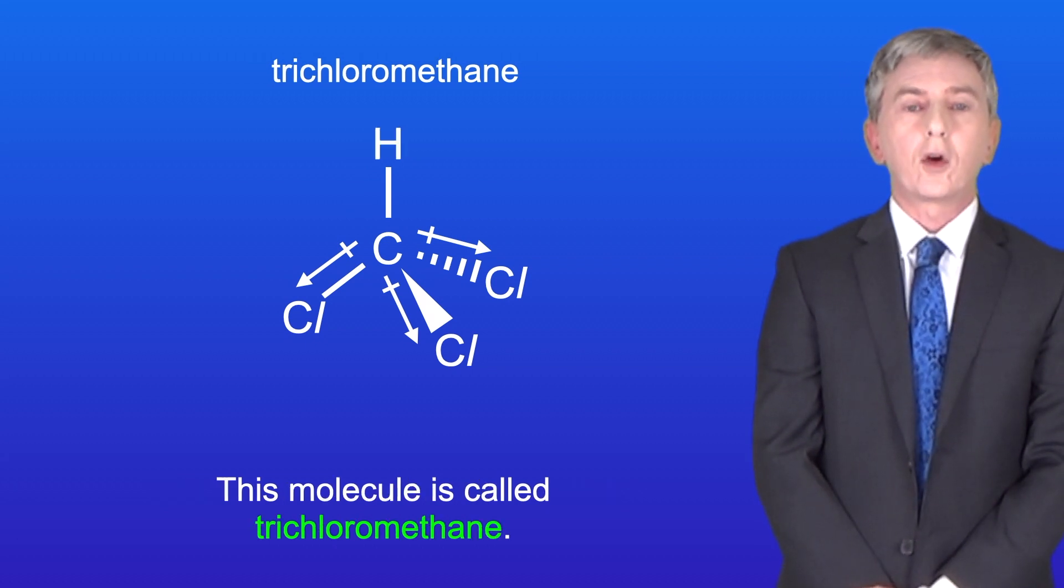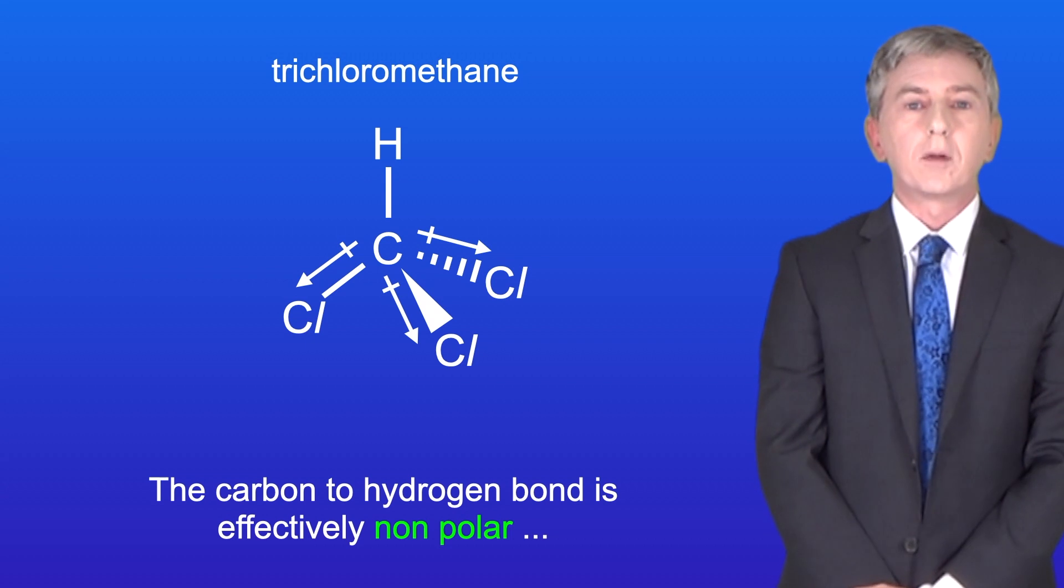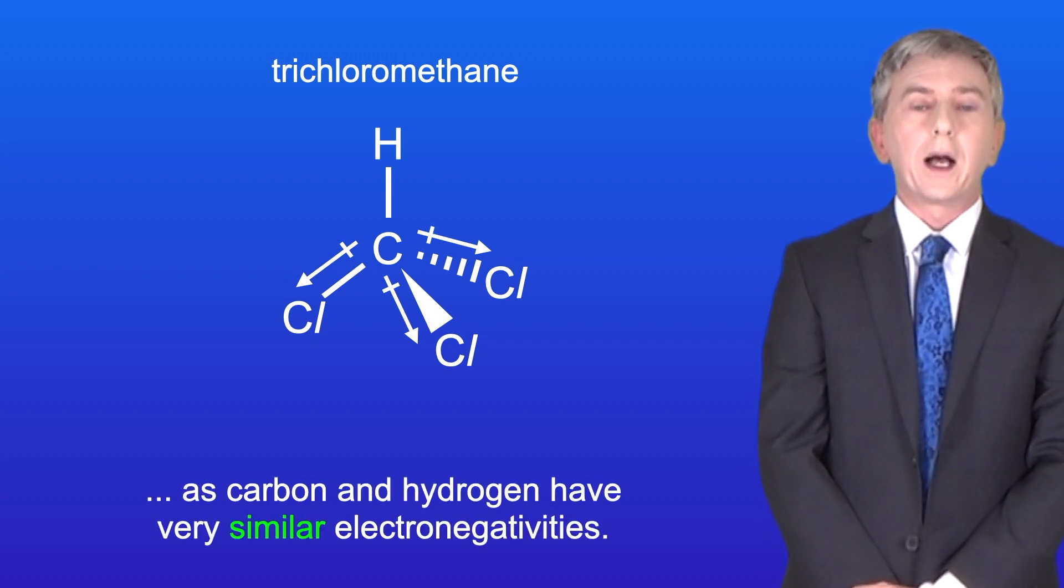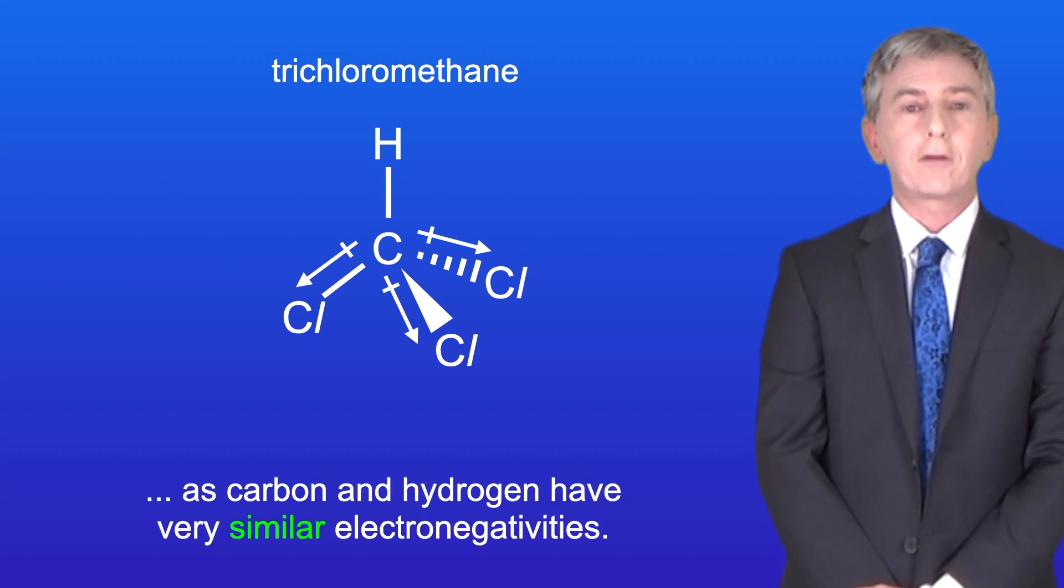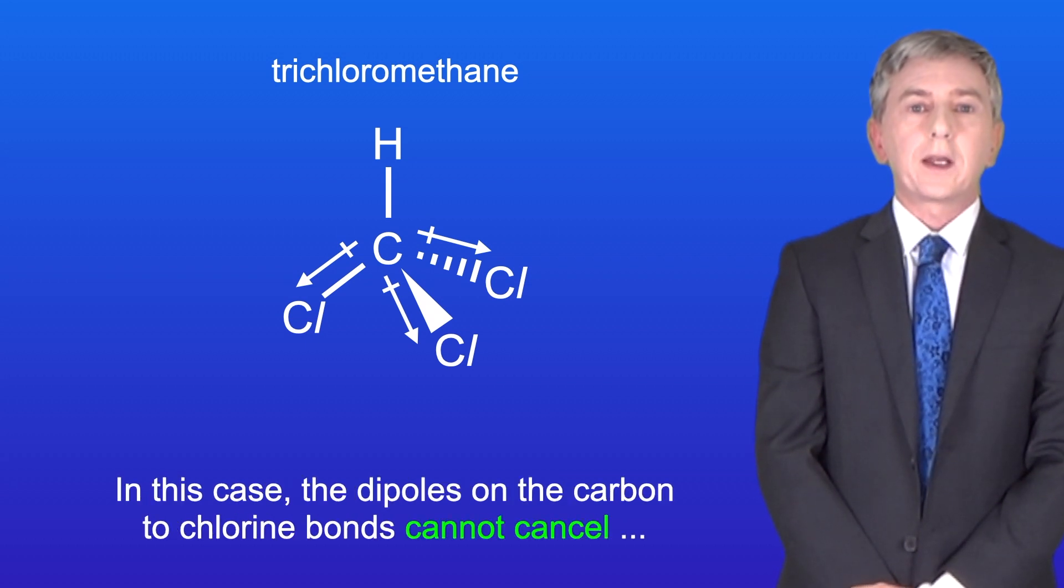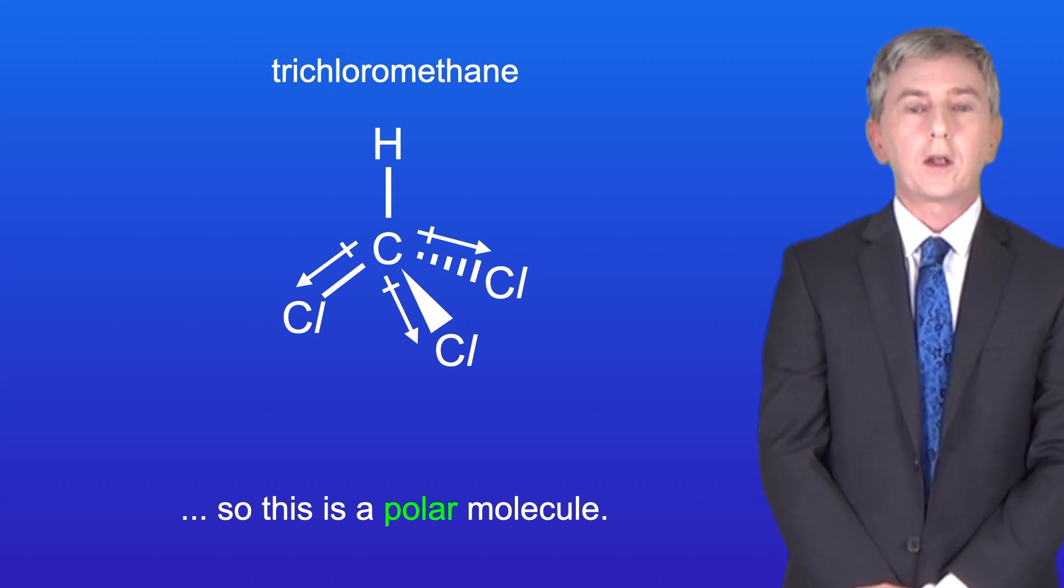This molecule is called trichloromethane. The carbon to hydrogen bond is effectively non-polar, as carbon and hydrogen have got very similar electronegativities. In this case, the dipoles on the carbon to chlorine bonds cannot cancel, so this is a polar molecule.